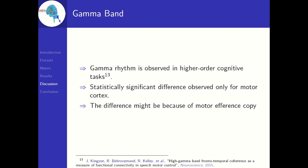Coming to the gamma band, gamma rhythm is observed in higher order cognitive tasks. We observed a statistically significant difference only for the motor cortex in the gamma band.